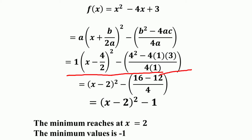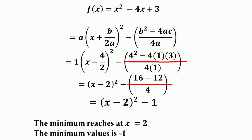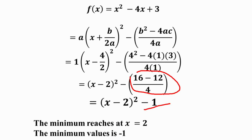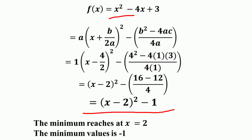Substituting a = 1, b = −4, c = 3: 1·(x − (−4)/(2·1))² − (4² − 4·1·3)/(4·1) = (x − 2)² − (16 − 12)/4 = (x − 2)² − 4/4 = (x − 2)² − 1. Since a = 1 > 0, the function has a minimum. The function reaches its minimum at x = 2 and the minimum value is −1.